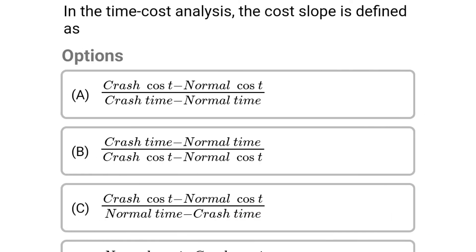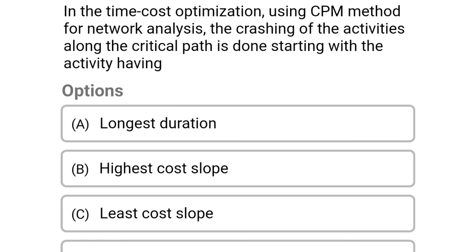Next question: in time-cost analysis, the cost slope is defined as — option A: (crash cost minus normal cost) divided by (crash time minus normal time), option B: (crash time minus normal time) divided by (crash cost minus normal cost), option C: (crash cost minus normal cost) divided by (normal time minus crash time), option D: (normal cost minus crash cost) divided by (normal time minus crash time). The correct answer is option C: (crash cost minus normal cost) divided by (normal time minus crash time).